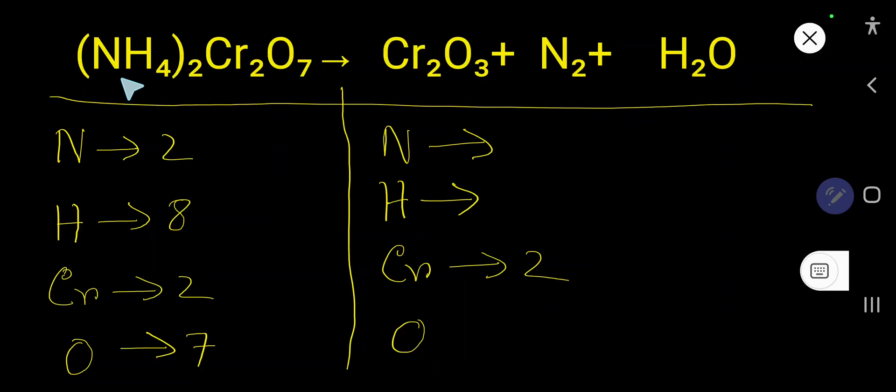How to balance (NH4)2Cr2O7, that is ammonium chromate, that produces chromium oxide Cr2O3 plus N2 plus H2O.